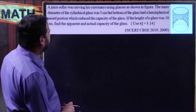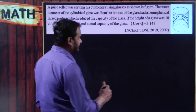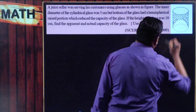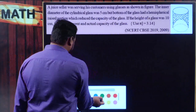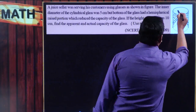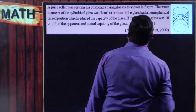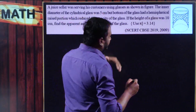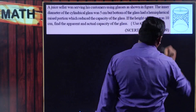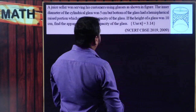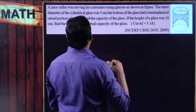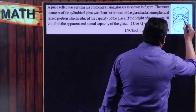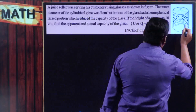The inner diameter of the cylindrical glass was 5 centimeters. See here the inner diameter - once you observe, this is what the inner diameter of the glass. So that was the inner diameter of the glass. Since it is the inner diameter of the cylindrical glass, inner diameter equals 5 centimeters. But the bottom of the glass had a hemispherical raised portion - this is what the hemispherical raised portion.